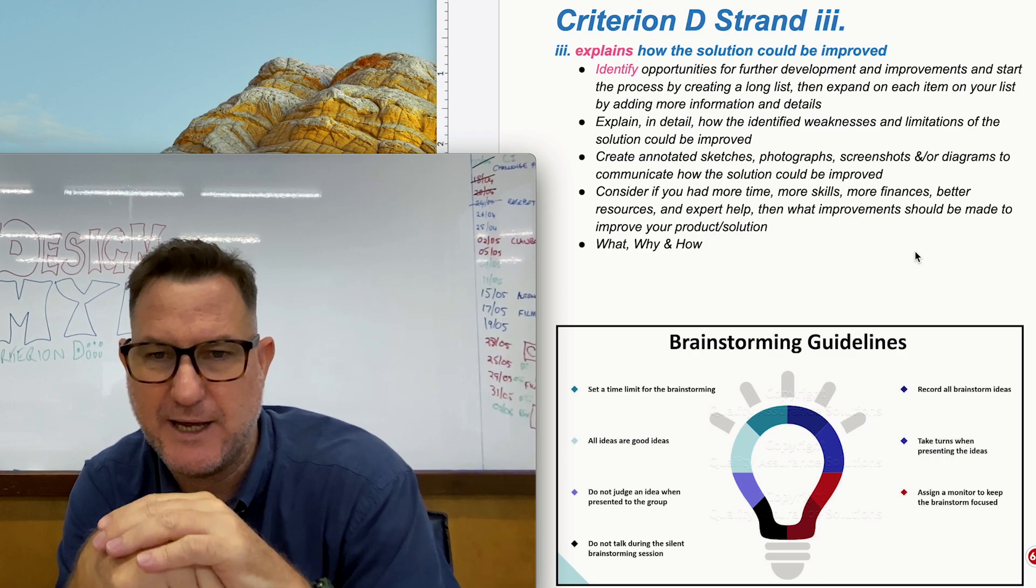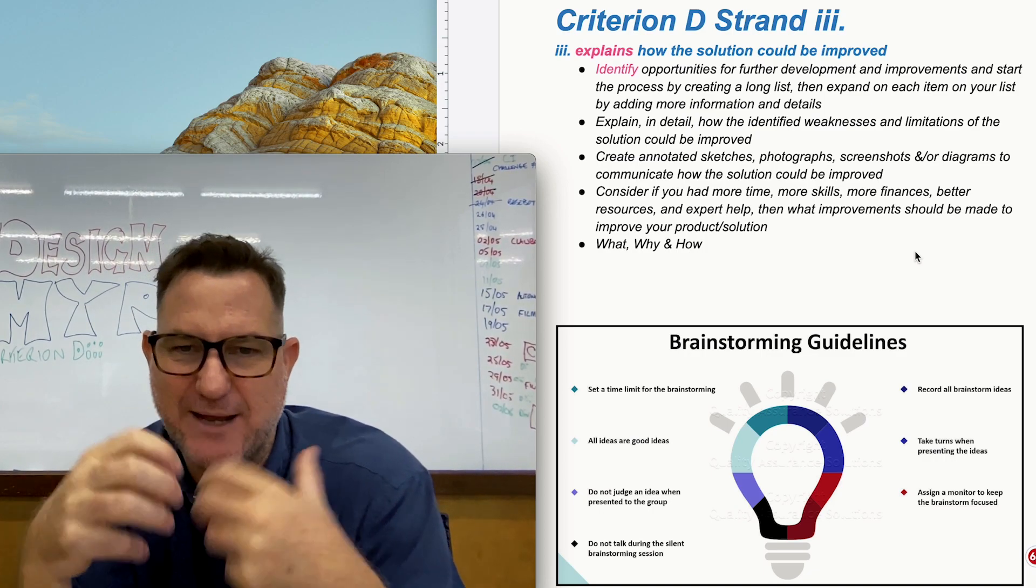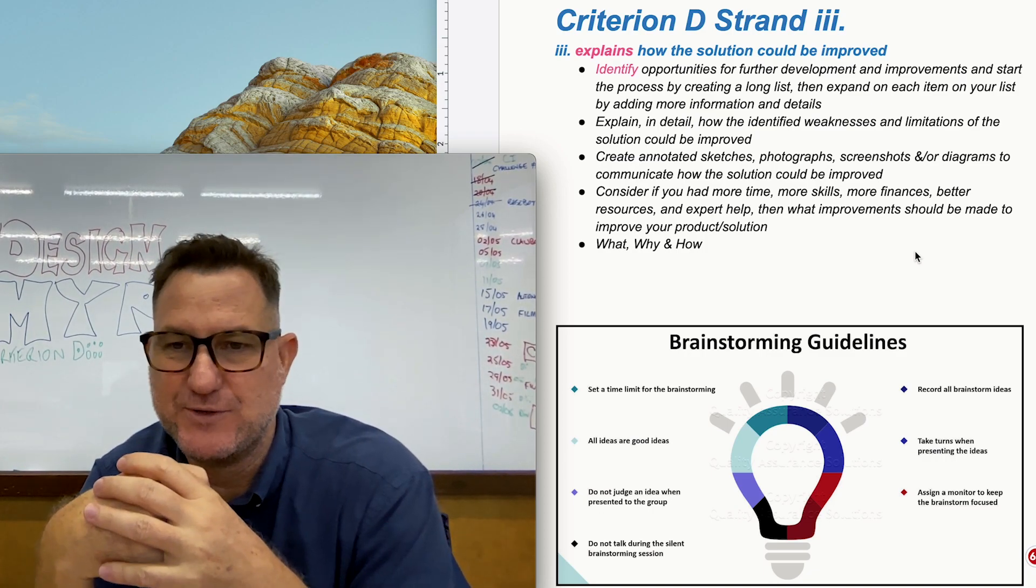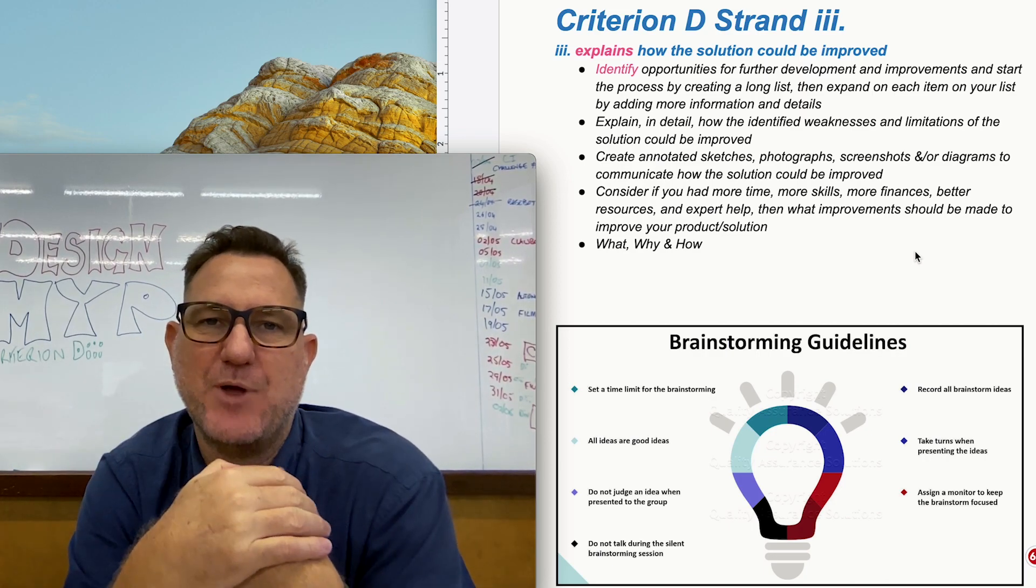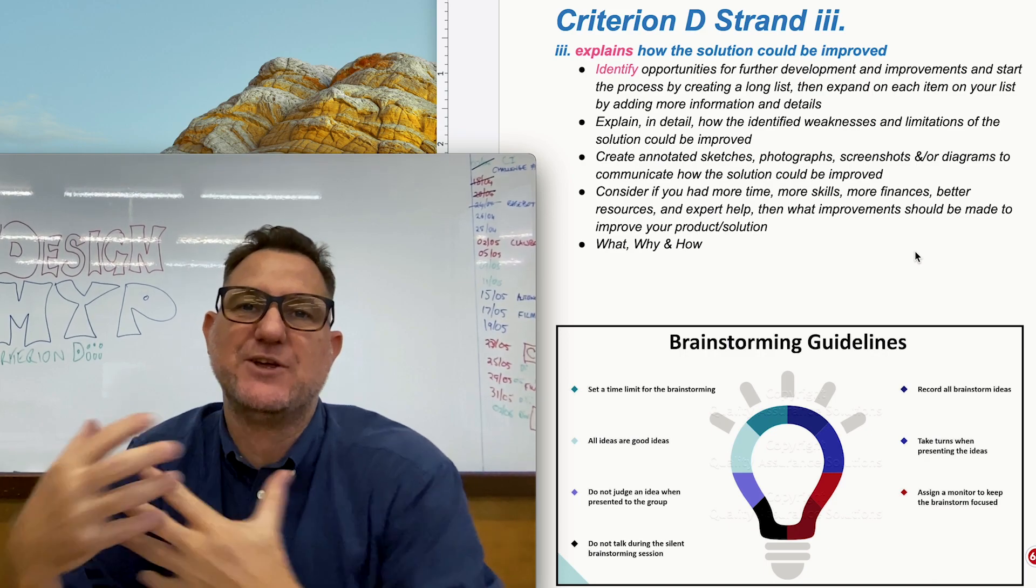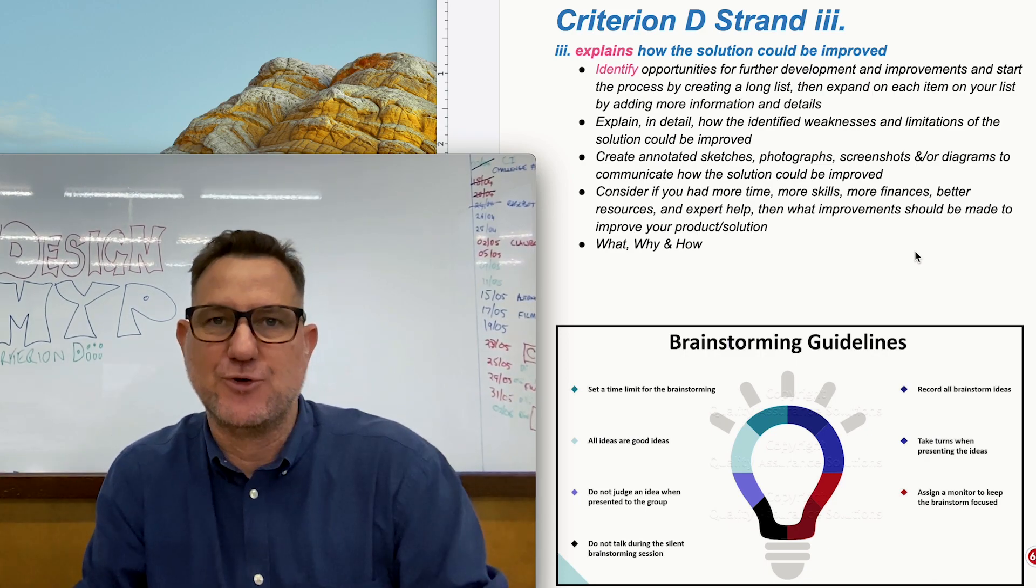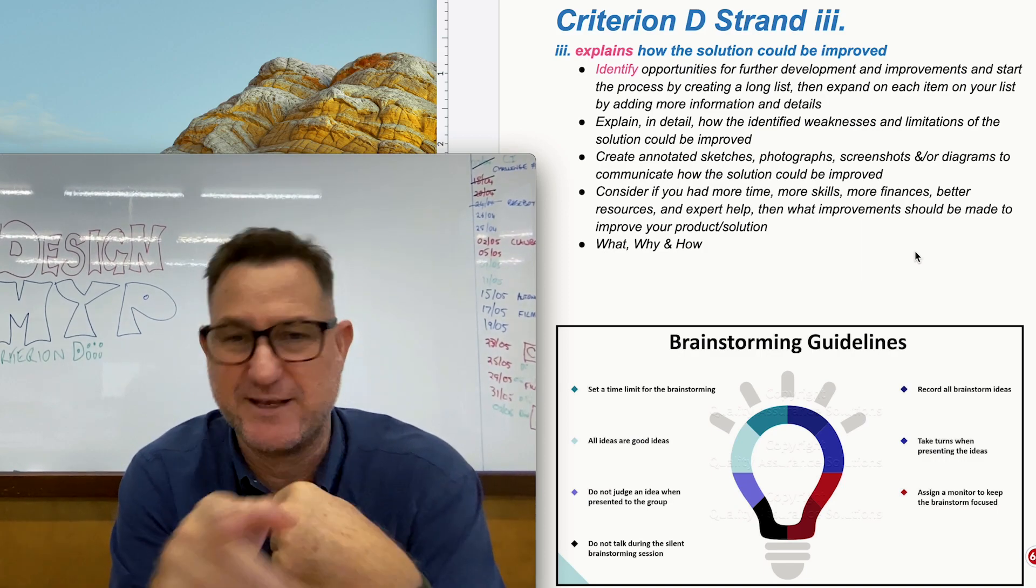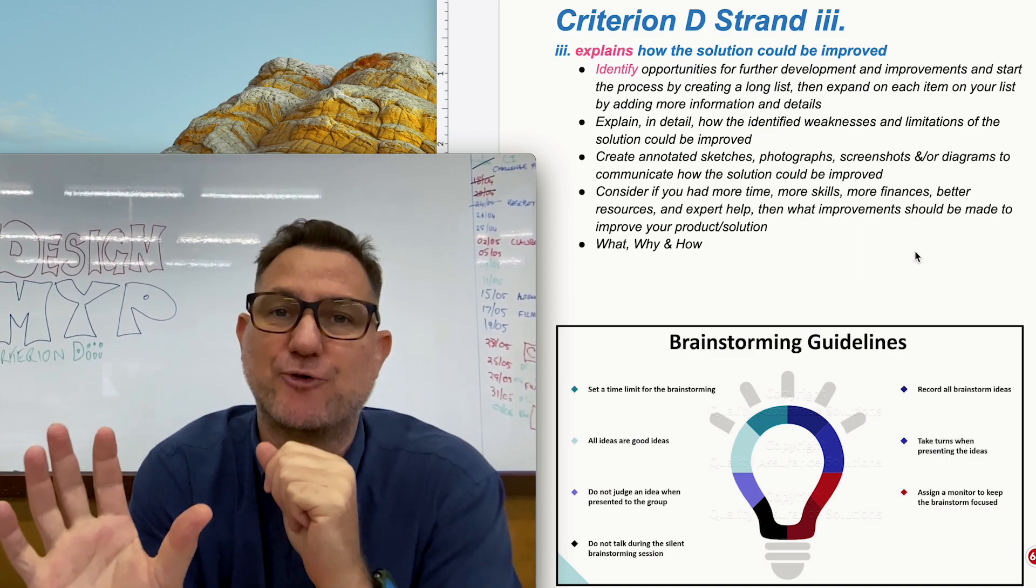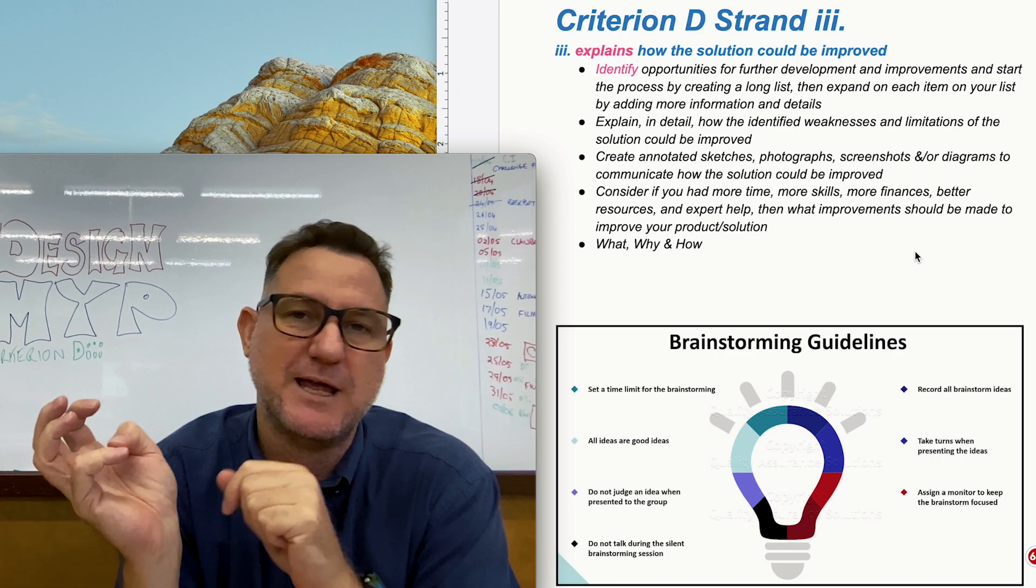The fourth bullet point I've already kind of mentioned, about if you had more resources what would you do to make things better. Now this is also a natural part of the design process when you get to the end and you presented your work you then realize you know what I probably could have changed that I probably could have done that. So this basically is a form of reflection you're looking back at your product and thinking about all the things you could do to make it better.